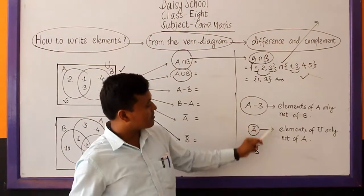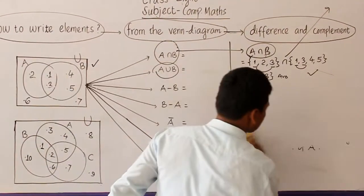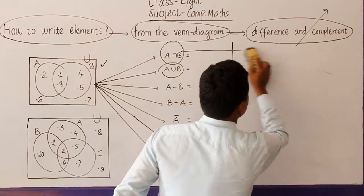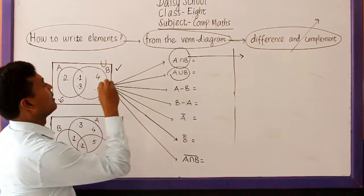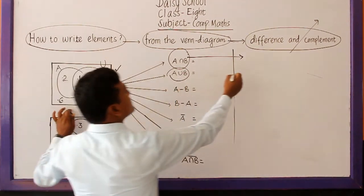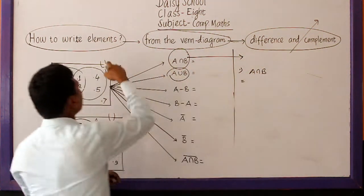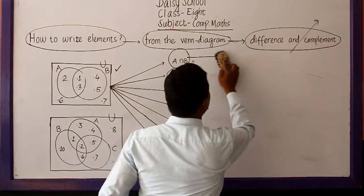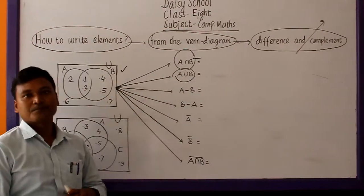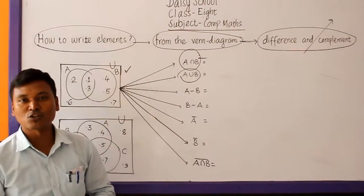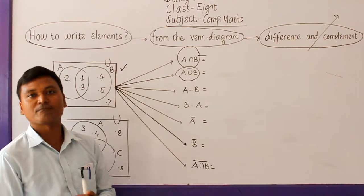Similarly, while finding B difference A, we write elements of B only, not of A. While finding B complement, we write the elements of U only, not of B. I hope you have not forgotten this, because how to find difference, how to find complement — we read already in our previous classes. So today we are reading how to write the elements of given set operation directly from the given Venn diagram.